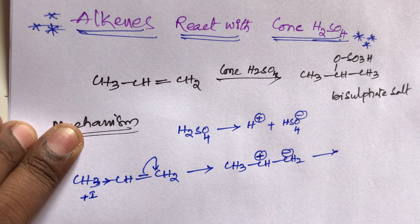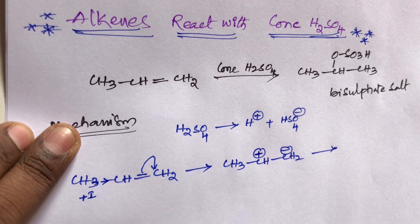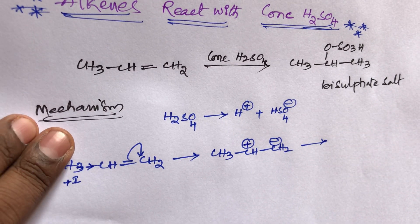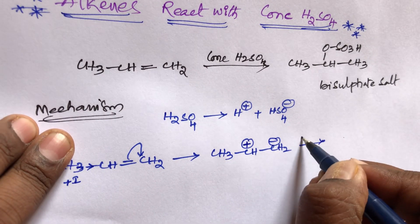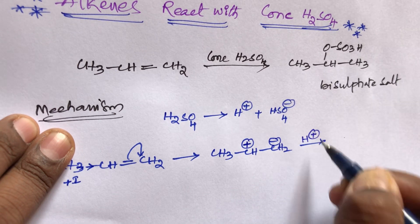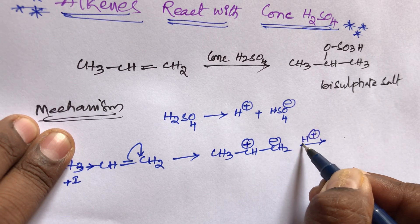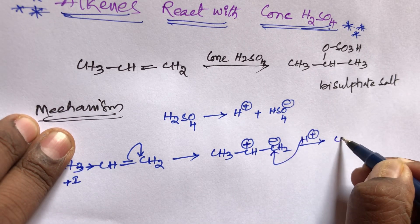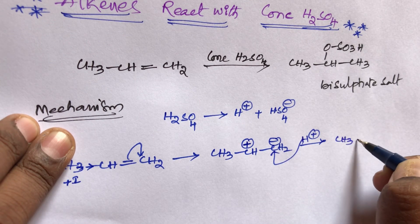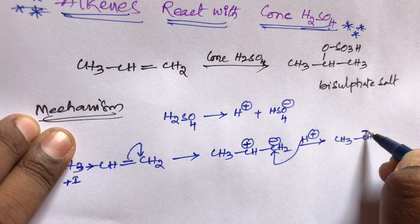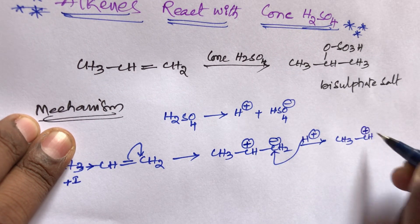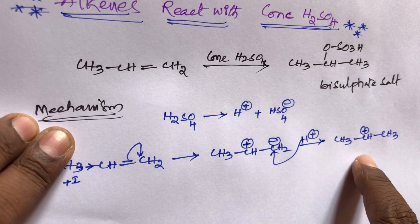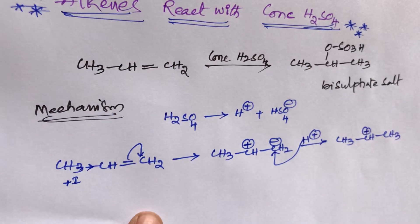This is electrophilic addition reaction. In electrophilic addition, the first attacker is H⁺. H⁺ attacks the negative charge side. An intermediate carbocation product is formed: CH₃–CH⁺–CH₃.